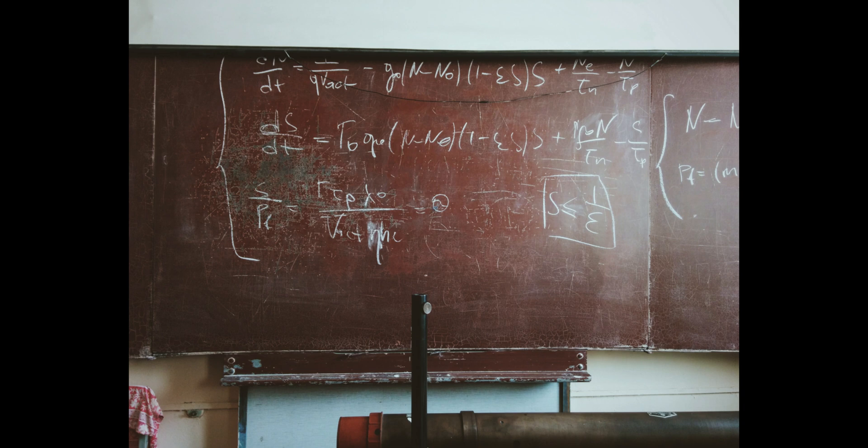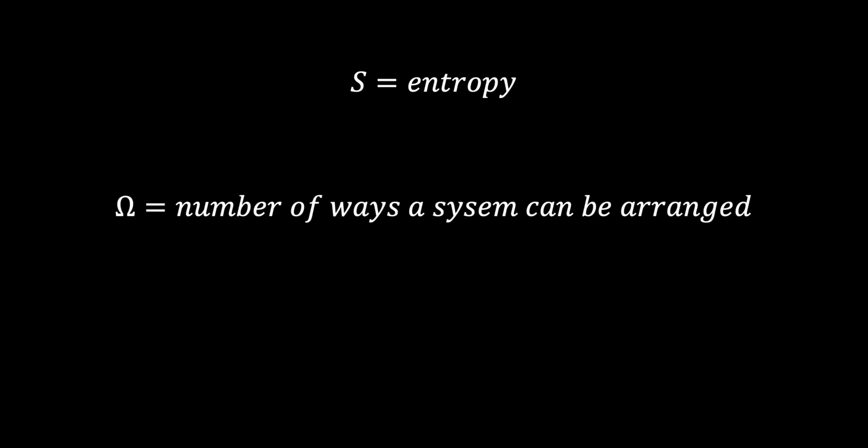In our first video, we defined a property called entropy, and we said that it was related to the number of ways that a system can be arranged. This property is critical in working with very large systems, and systems will move to increasing entropy simply due to the higher probability of finding a system in a state that has more configurations. We defined entropy mathematically as the Boltzmann constant multiplied by the natural log of the number of ways the system can be arranged. Each such arrangement is known as a microstate, and one of the assumptions we made is that each microstate is equally likely, from the ergodic hypothesis — the fundamental postulate of statistical mechanics.